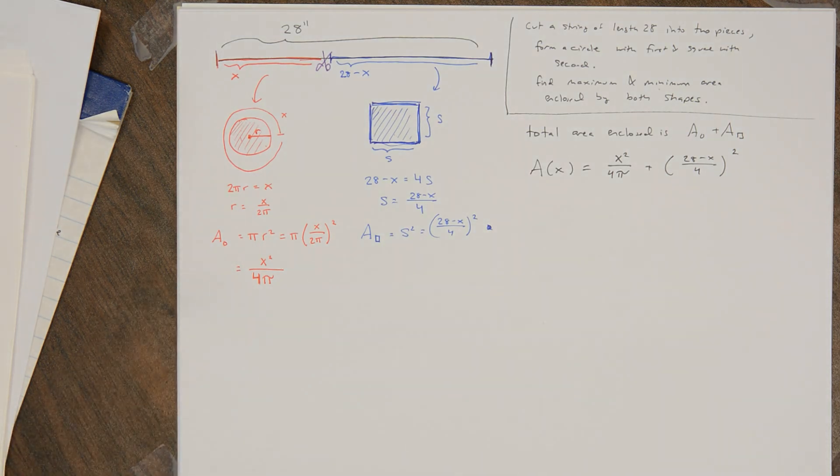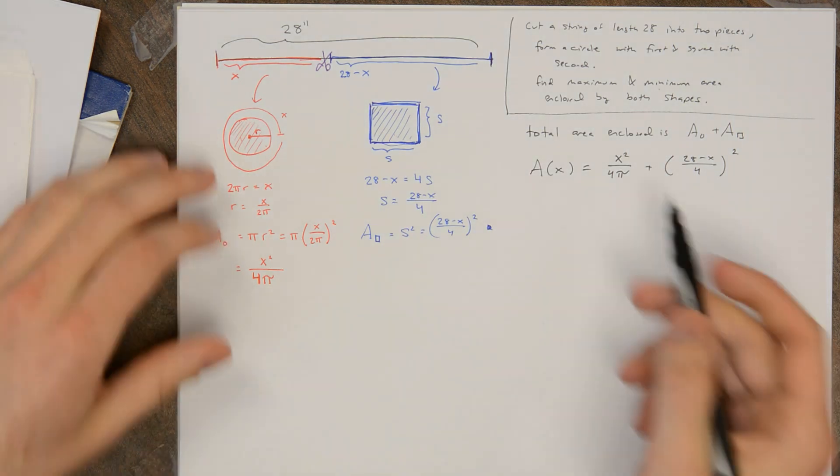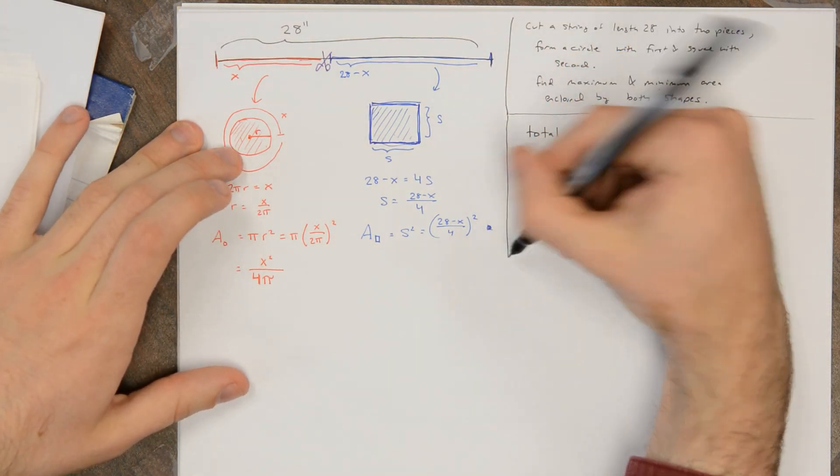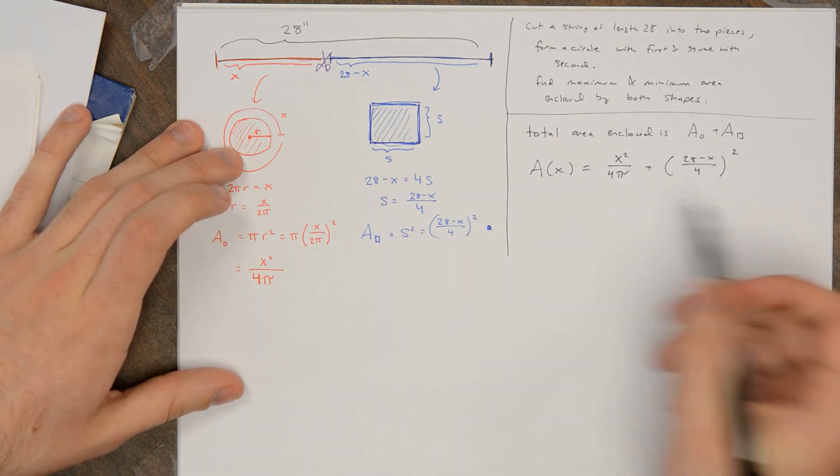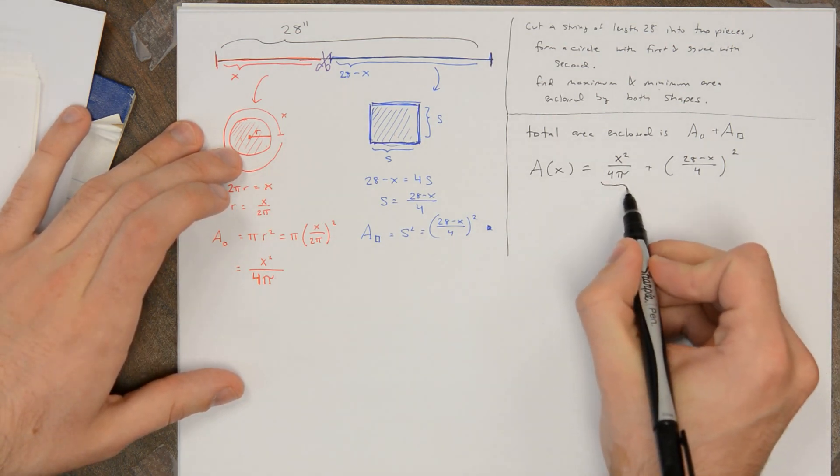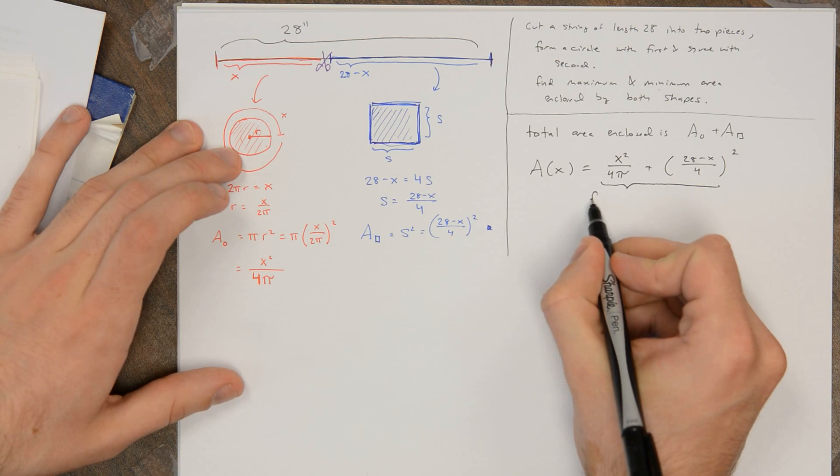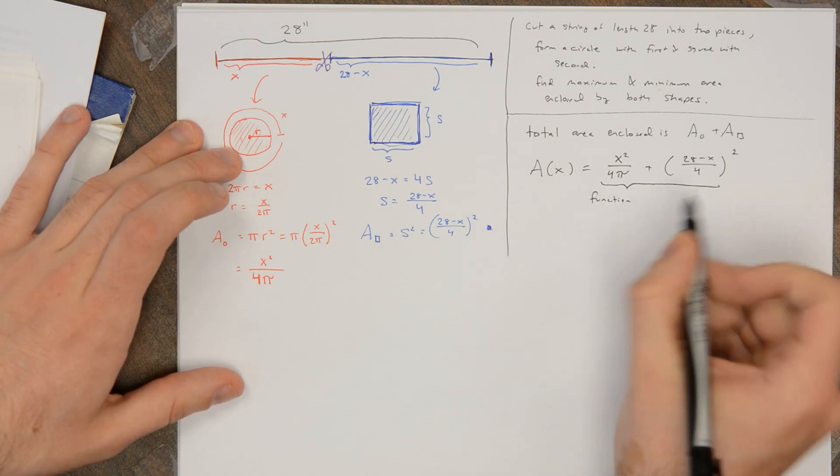Alright, so the question is, here's what we want to optimize. We want to find the absolute max and absolute min of this, but on what domain? Again, sort of algebraically, this makes sense for any x. It's a polynomial in x. But we need to find the domain that's appropriate for this problem.